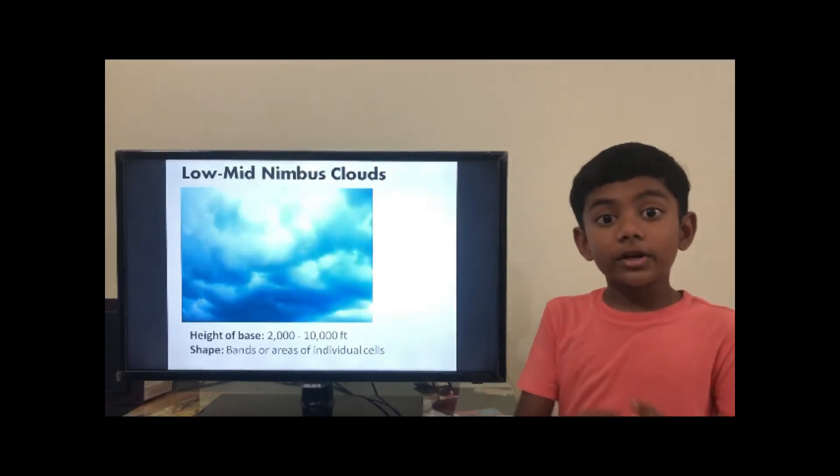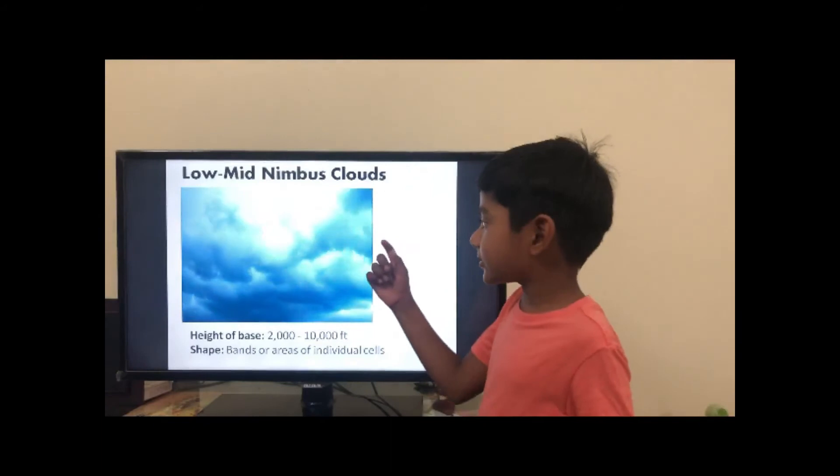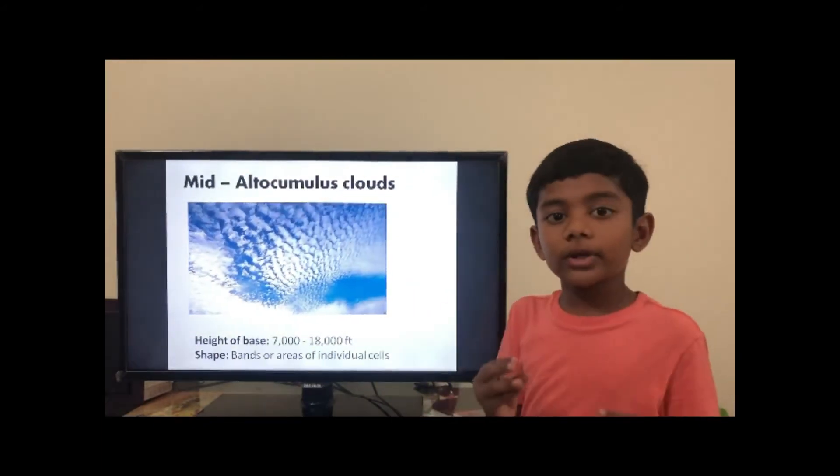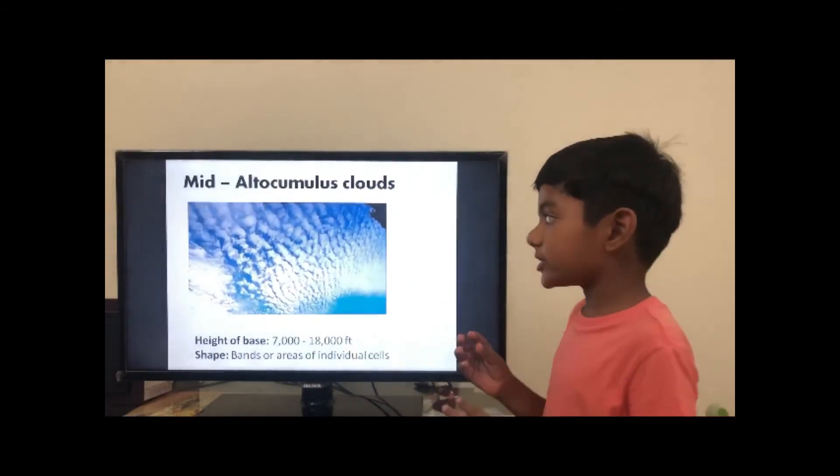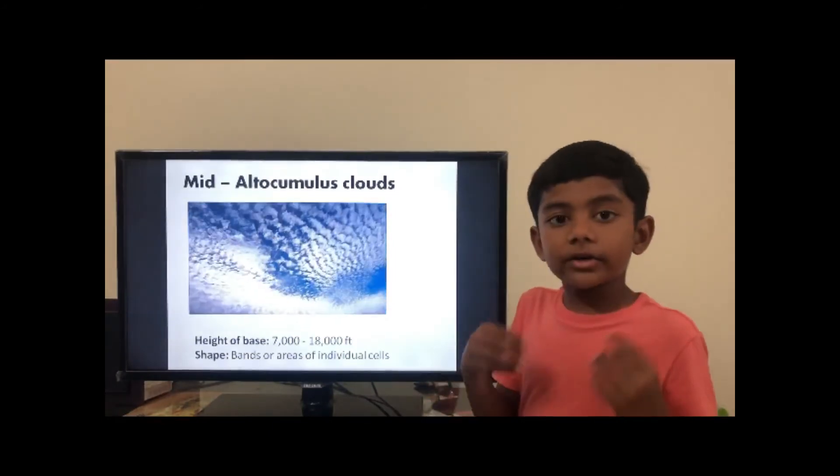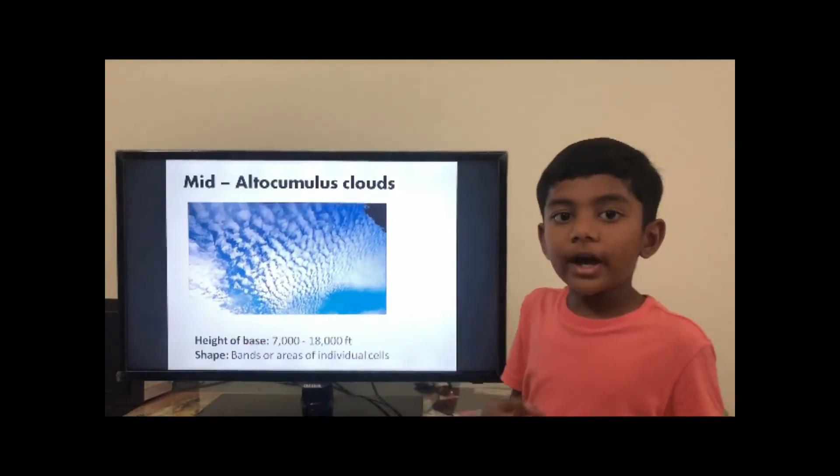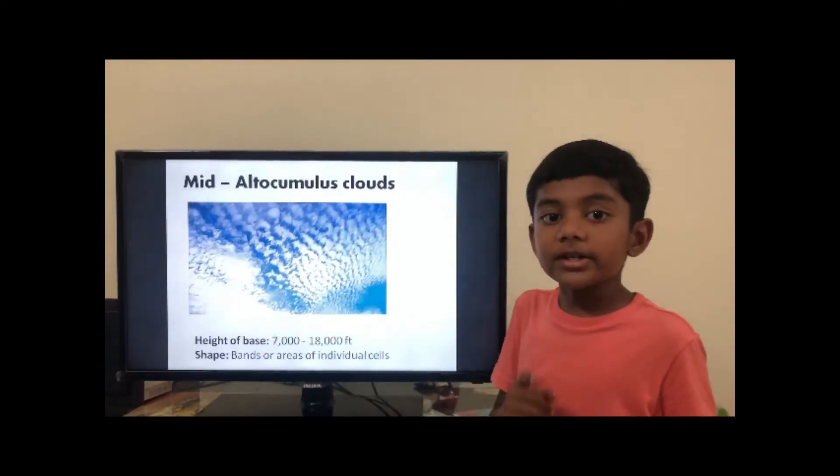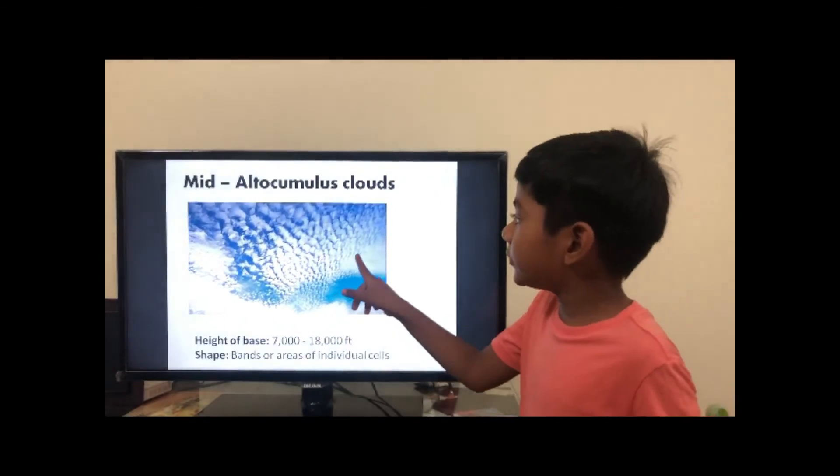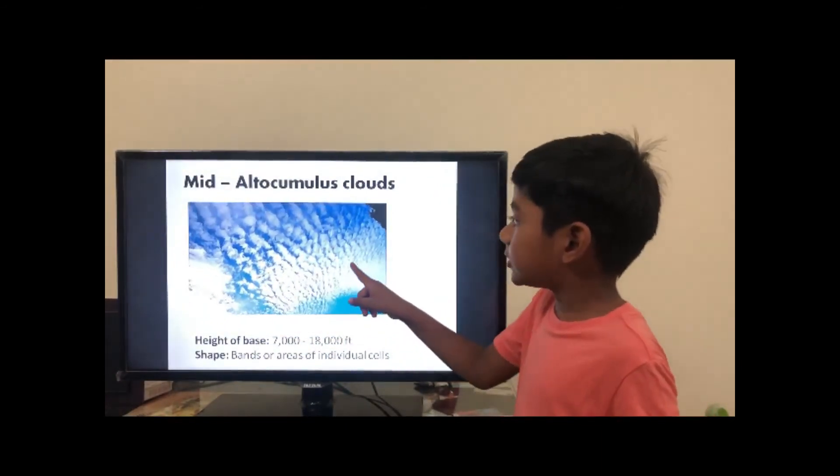Next, it is the altocumulus clouds. Altocumulus clouds are like gray or white patches along the sky, and it is most commonly seen with other clouds. See if you can see in this video, it looks like white patches all across the sky. Can you see it?